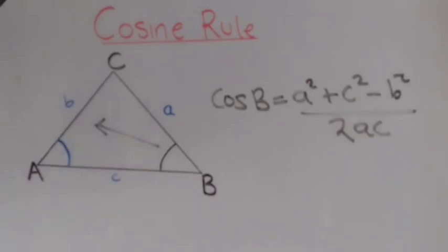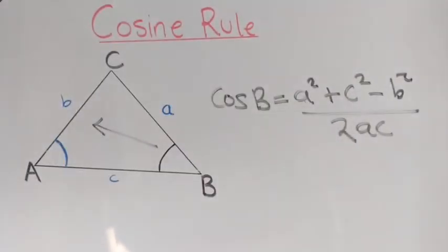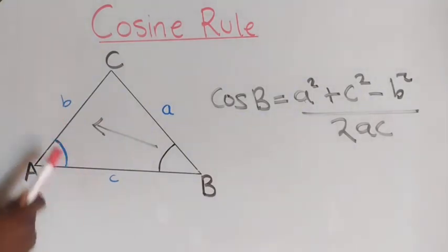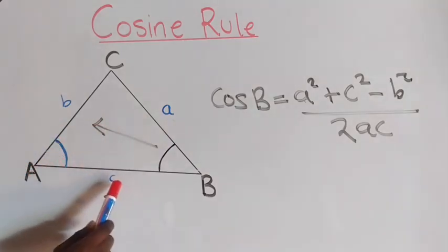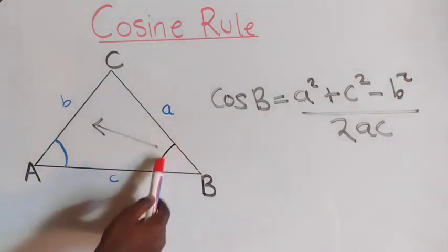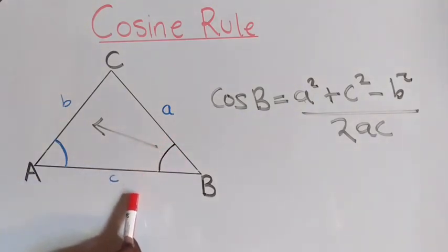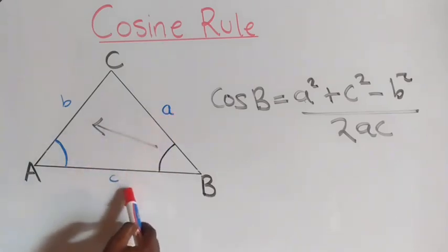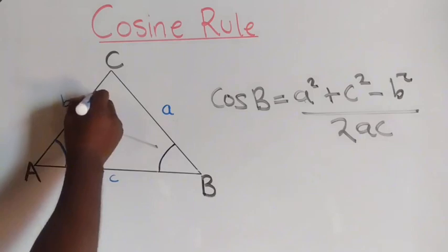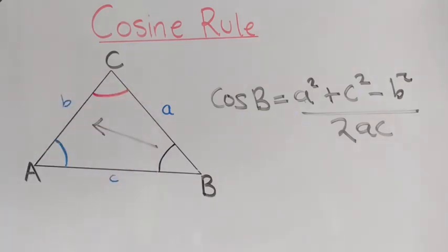So to summarize: for angle A, use b² + c² minus the corresponding side a², over 2bc. For angle B, use a² + c² minus the corresponding side b², over 2ac. Now try to pause the video and work out the formula for angle C before we compare answers.